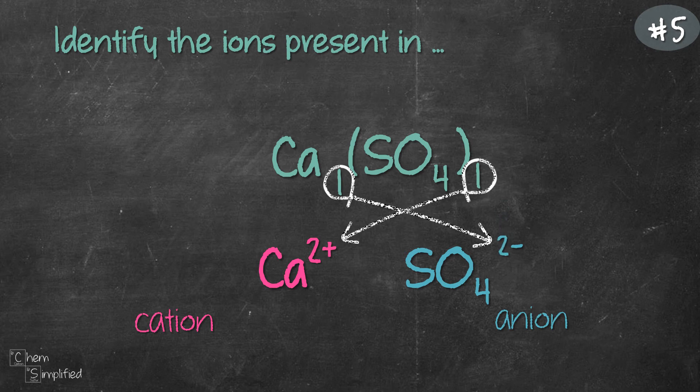So that means our SO4 is actually 2- charge. The 2s got dropped off when they cross over because they get simplified. So that is why it's very important to do the final check to make sure that the charges on the ions are all correct.